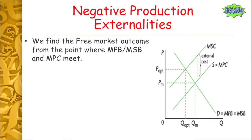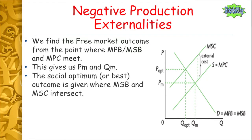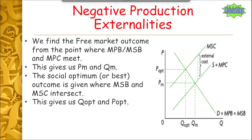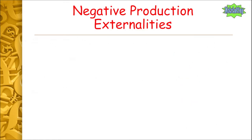We can find the free market outcome from the point where the marginal private benefit, marginal social benefit, and marginal private cost meet — shown at point Pm and Qm. That is our equilibrium. The social optimum, or best outcome, is given where the marginal social benefit and marginal social costs intersect. Since the marginal private benefit and marginal social benefit are the same here — no spillover benefits — the optimum point for society is to produce less at Qopt and at a higher price of Popt, which covers the external cost of production.